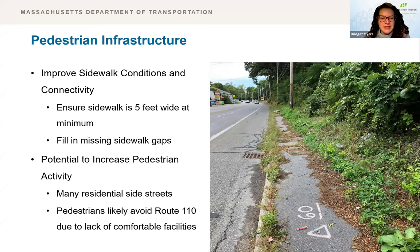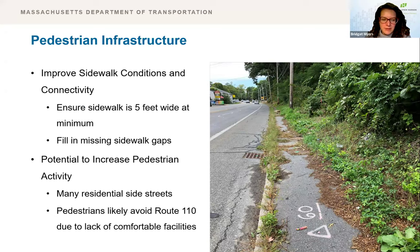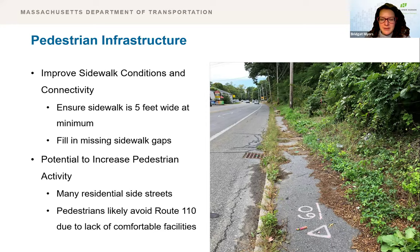Pedestrian activity is low on Route 110, but higher in surrounding areas — likely due to lack of pedestrian accommodations on the corridor. There's an existing sidewalk on the north side, but it is not ADA compliant nor comfortable for any user. It's narrow and overgrown with vegetation, and there is currently no existing sidewalk on the south side. The project will improve pedestrian infrastructure by reconstructing the entire sidewalk to be at least five feet wide, filling in gaps, and including ADA compliant ramps at side streets.